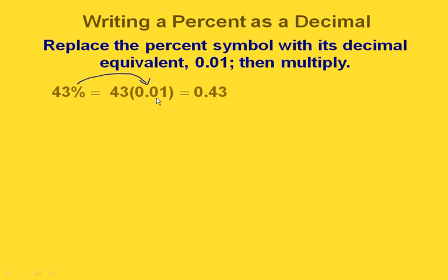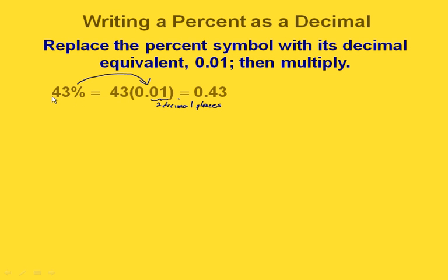Notice what happens here — we're multiplying by a power of 10. And remember when we had powers of 10 that were less than 1, we counted the decimal places. This has two decimal places. What that means is that it would move our decimal point two places. So notice how when we started with 43% and went to the decimal, it moved the decimal over to the left two places.